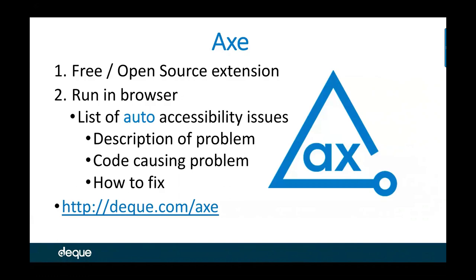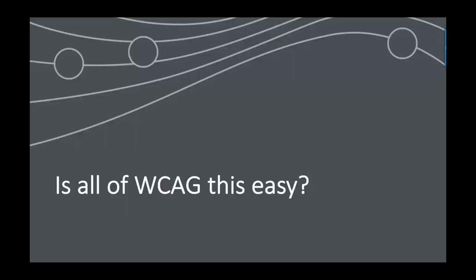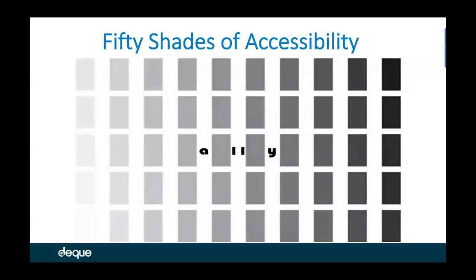So if we know WCAG is our objective digital compliance measure, and we have three simple options — keyboard-only testing, or running axe to see things like form labels or missing alt attributes — the question may come to mind: is all of WCAG this easy? Without a doubt, I will say no. Accessibility is not all that easy. There are pieces of WCAG measurement that are that easy, and I wanted to give you some so you could do something productive right away.